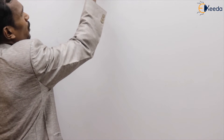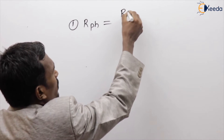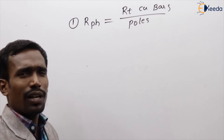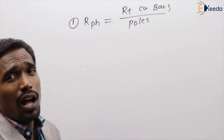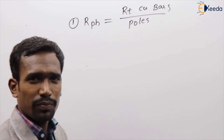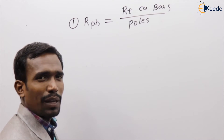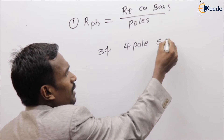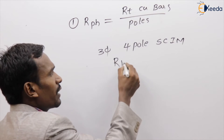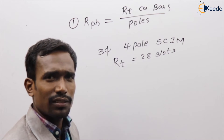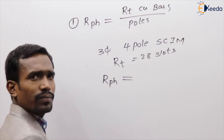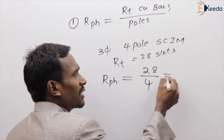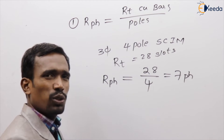The first formula: rotor phases equals rotor copper bars divided by number of poles. I told you already what the formula is, and based on this we done a problem also. The previous IES problem: they give a three-phase, four-pole squirrel cage induction machine with rotor having 28 slots. Rotor phases equals 28 divided by 4, so it is a seven-phase machine. This is a previous IES question — you can find it in previous questions.